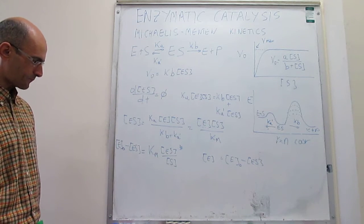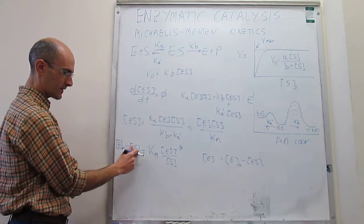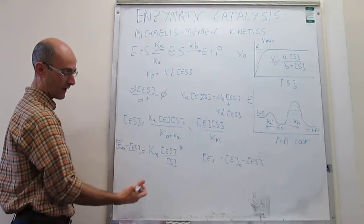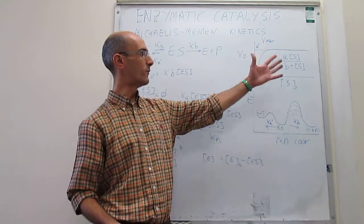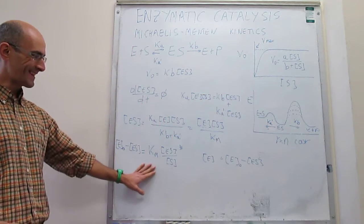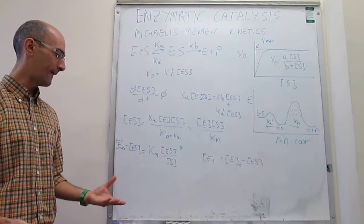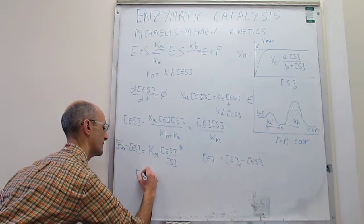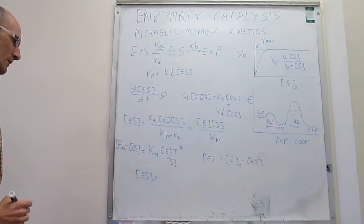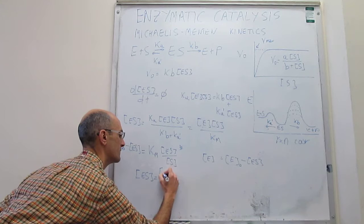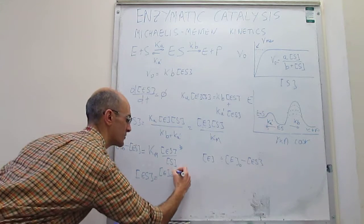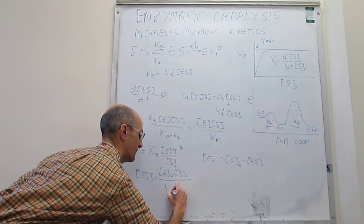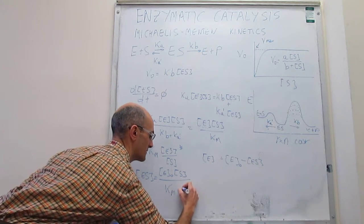The concentration of enzyme [E] = [E]_0 − [ES]. Substituting and solving for [ES], we find that the concentration of the enzyme-substrate complex equals [E]_0 times [S], divided by K_M plus [S]. This is a very nice result because [ES] now depends only on the constant [E]_0, the Michaelis constant K_M, and the concentration of substrate.